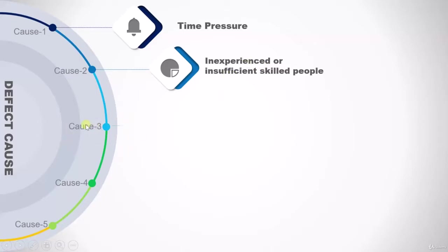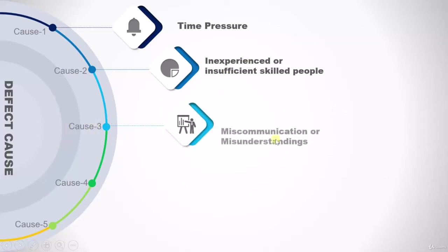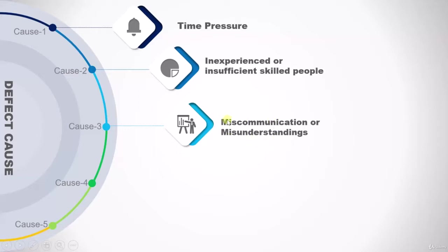The third cause talks about miscommunication or misunderstanding. If there is no proper communication channel in your organization, then that could also result in a misunderstanding and in the end it will cause a defect.